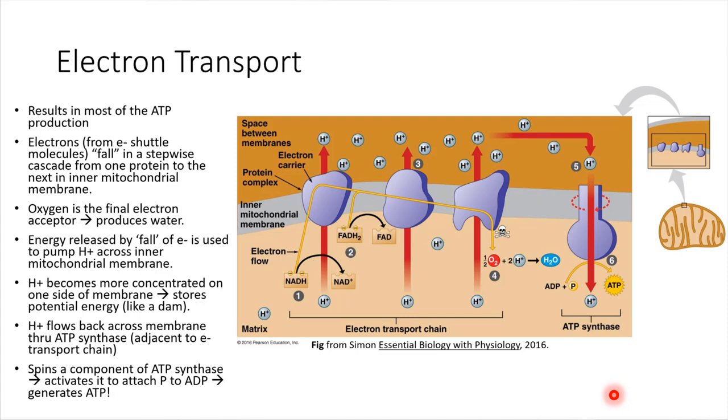What happens in electron transport is kind of like the name implies. The electrons from the shuttle molecules are going to get transported down a chain of proteins. So in purple, these are proteins that are embedded inside of the mitochondria. Let's just jump over here to the schematic real quick. So here's a schematic of a mitochondria. Remember mitochondria have all of these folds inside.